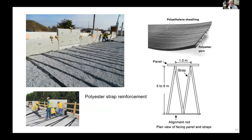We're seeing more and more today the use of polyester strap reinforcement instead of continuous sheets of geotextile or geogrid reinforcement. These straps are wound back and forth as you can see here, but they perform the same function — to stiffen and strengthen the backfill soil and support the facing units.